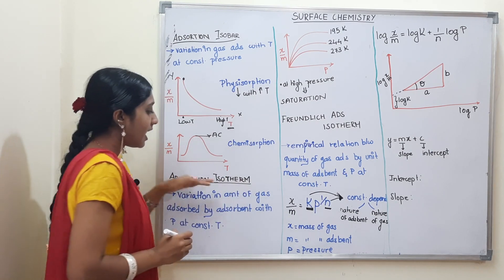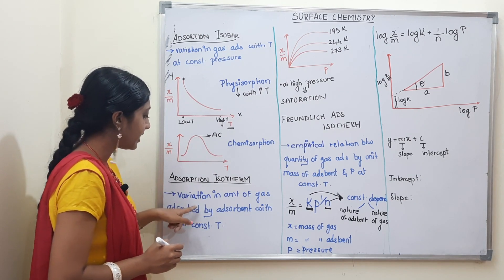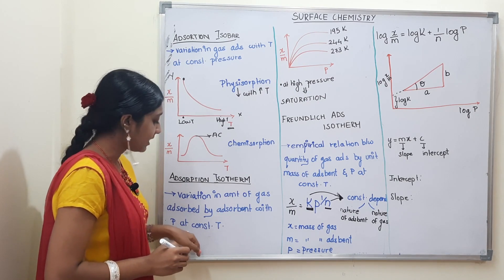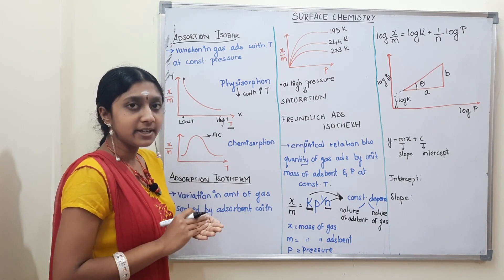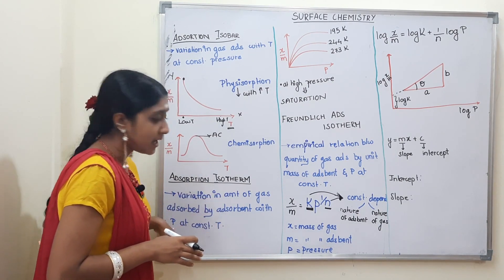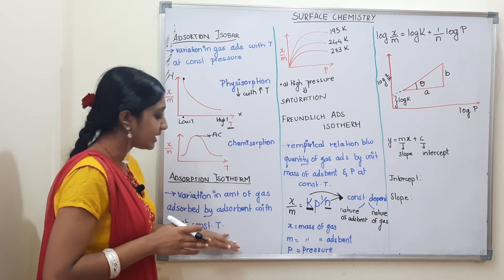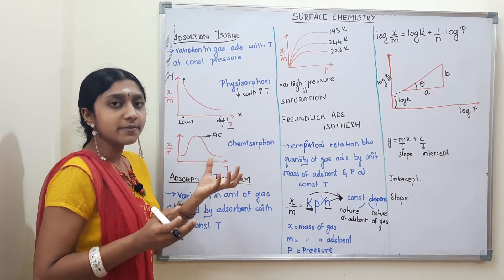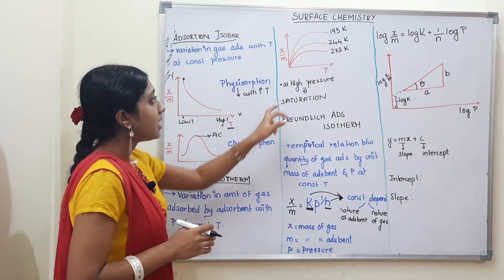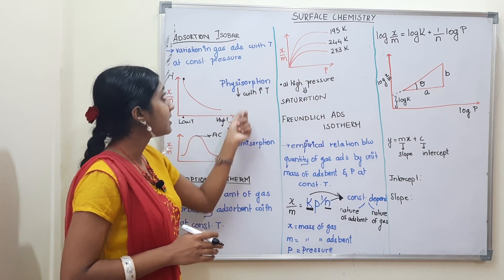Next is the adsorption isotherm, which is the opposite concept. Here, temperature is constant while pressure varies. It describes the variation in the amount of gas adsorbed by the adsorbent with pressure P at constant temperature T. In the graph, the y-axis is x/m and the x-axis is P (pressure), and temperature is held constant.